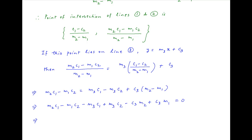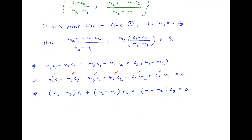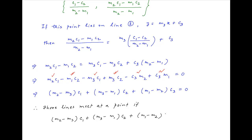Collecting the coefficients of c1, c2, and c3 respectively, we get: m2 minus m3 times c1, plus m3 minus m1 multiplied by c2, plus m1 minus m2 times c3 equals 0. Therefore, to summarize, the three given lines meet at a point if m2 minus m3 times c1 plus m3 minus m1 times c2 plus m1 minus m2 times c3 equals 0.